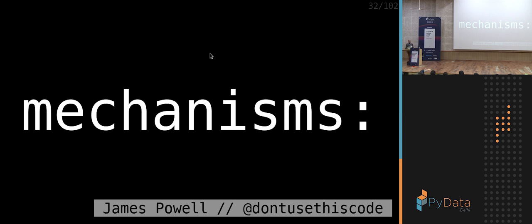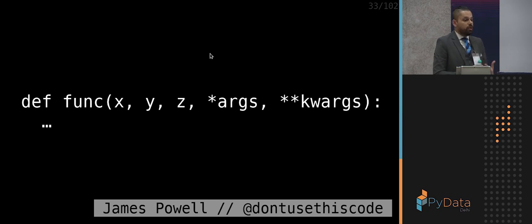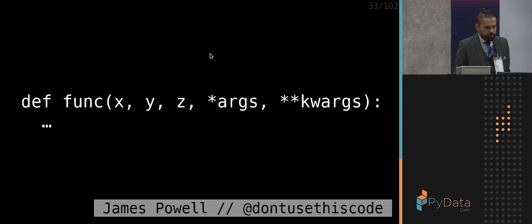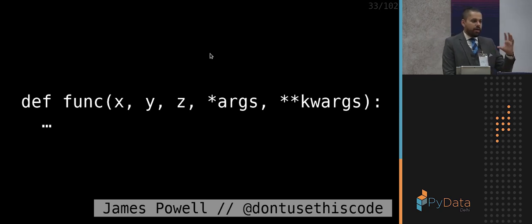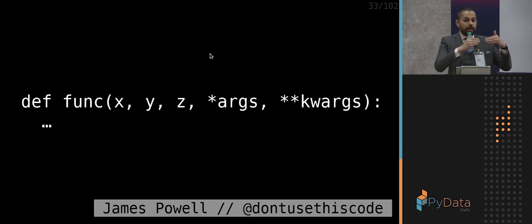When we talk about mechanisms of Python, we talk about things provided to the library author — conveniences that make it easy to manage a library. Historically Python hasn't focused much on this, but you can see a lot of recent work where the library author perspective is taken as a core perspective for how the language design evolves. For example, one of the original mechanisms provided to library authors are *args and **kwargs — something we take for granted today.